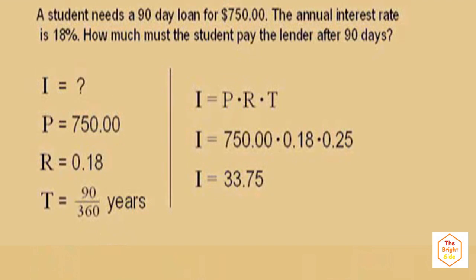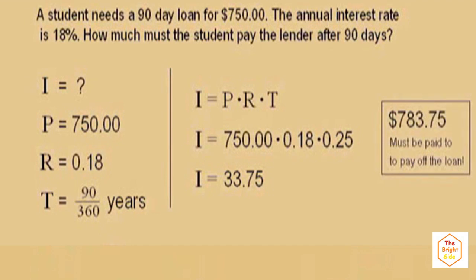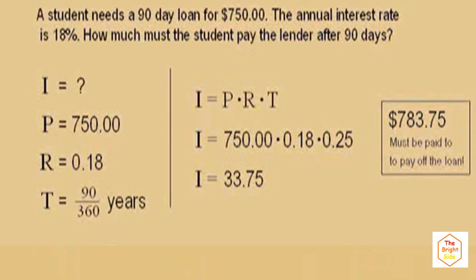That's how much interest the student has to pay on top of the money he already borrowed. The total amount the student has to pay after 90 days is $783.75 — you just sum those up. That completes our simple interest lecture. We'll see you all again soon.